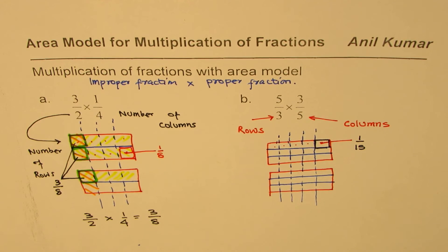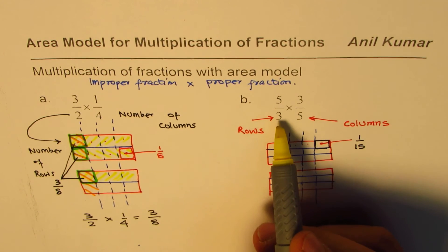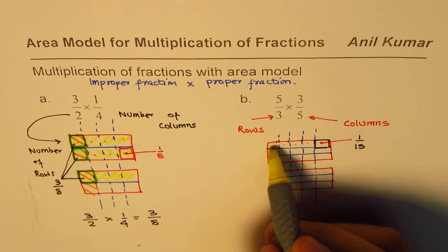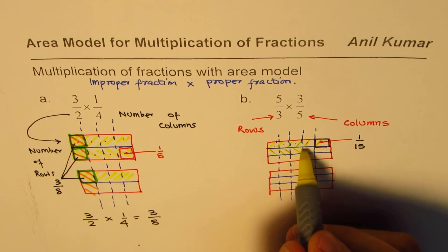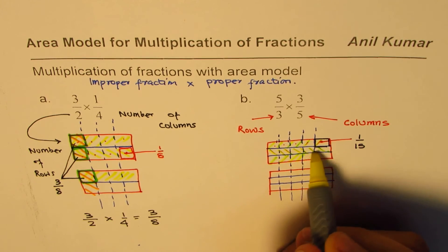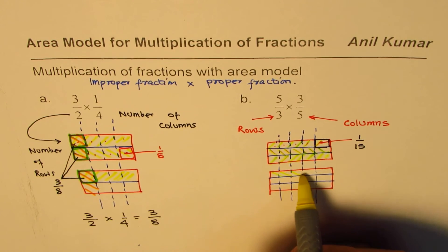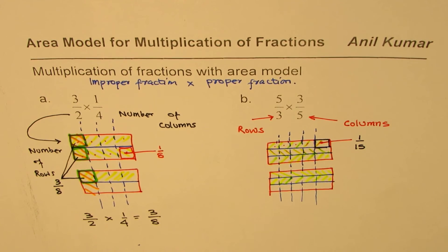Now let's begin. 5 over 3. So 5 rows, 5 one third row. So 1, 2, 3, 4, and 5. Do you see that? So we selected 5 one third.